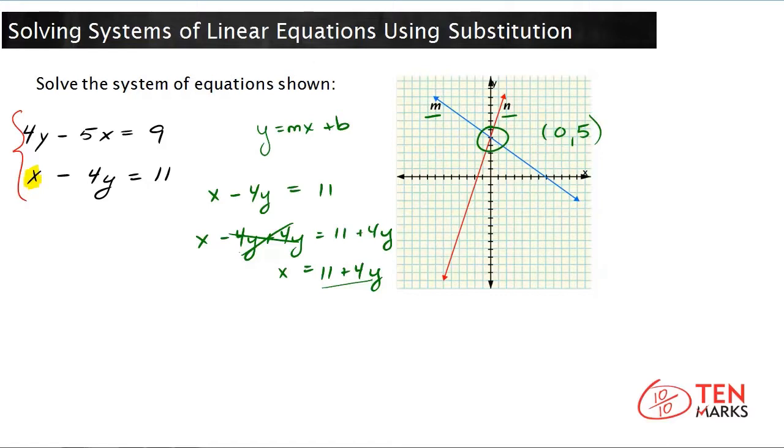I just want to show you really quickly why it was useful to find a variable with a coefficient of one. For a second, imagine that the coefficient in front of x had been two. So you get to the point of 2x equals 11 plus 4y.